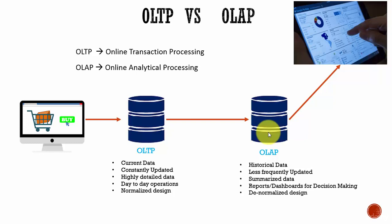In this way, we can maintain all the historical data. Maybe you want to store 10 years worth of data — you can do that. You can store all that historical data in an OLAP database and use that data to generate reports, dashboards, and trend analysis. All these reports and dashboards will be used for decision making.